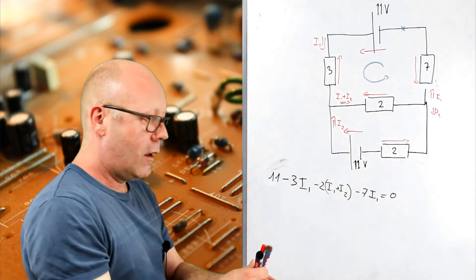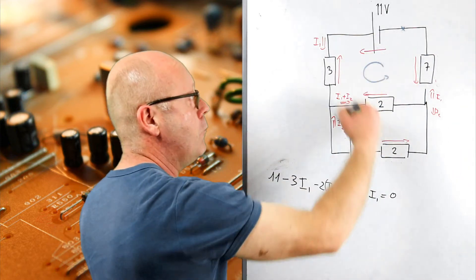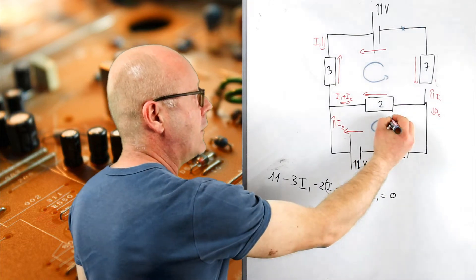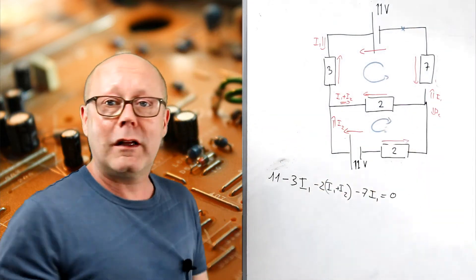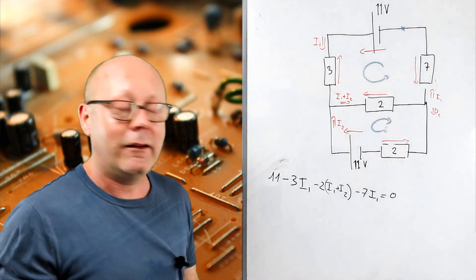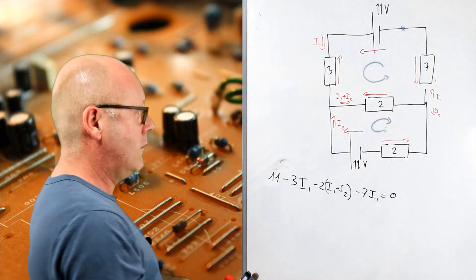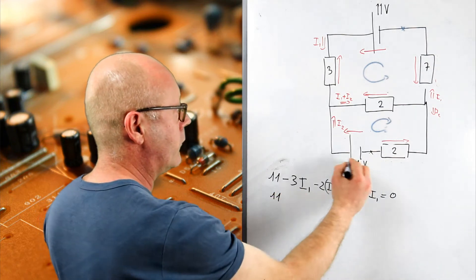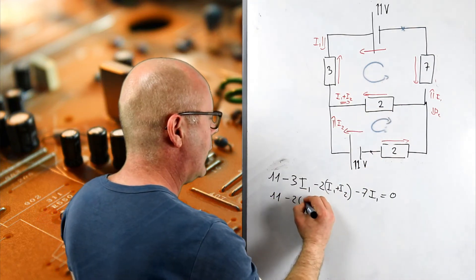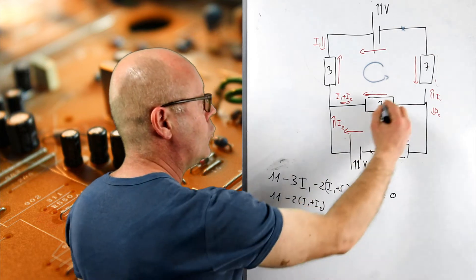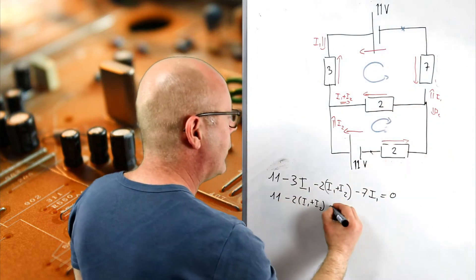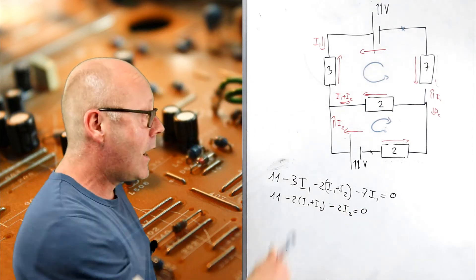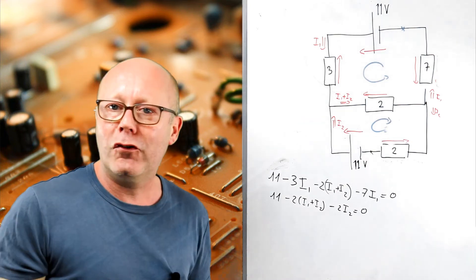So, I'm going to use point stones. I could use another. I could use this loop, but I'm going to use this one. And actually, I'm going to follow the direction of the current. So, I can choose whatever I want. I can go in all directions I want. Doesn't matter. So, here, I'm going to start here. Get 11, minus 2 (I1 plus I2), minus 2 I2, equals zero. Now, I have two equations with two unknowns I should be able to solve.